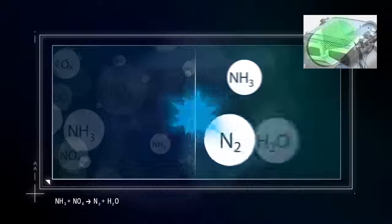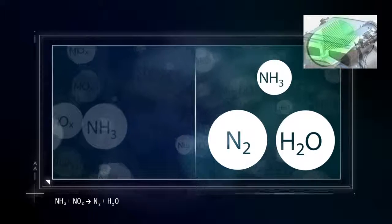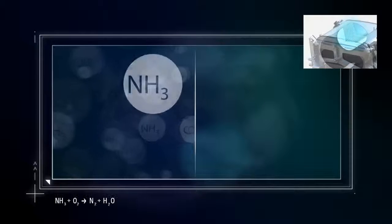The last element that the exhaust gas flows through is an ammonia blocking catalytic converter. This converts any residual amounts of the reduction agent into nitrogen and water.